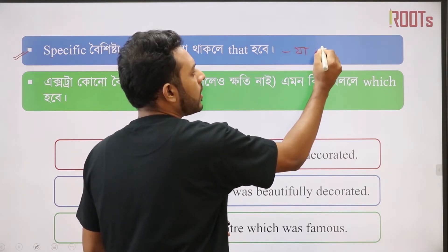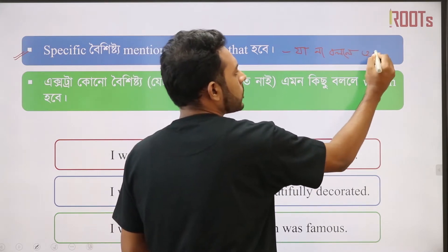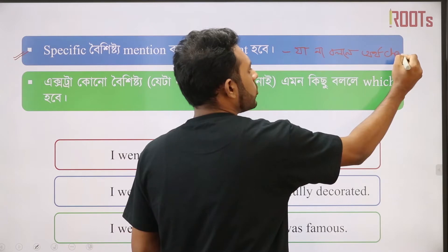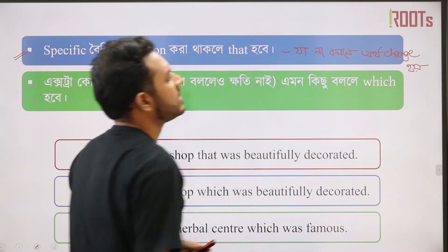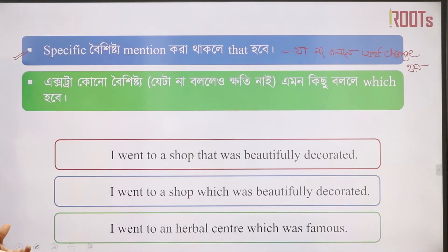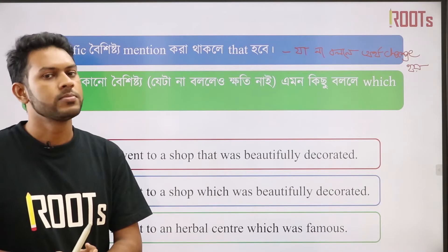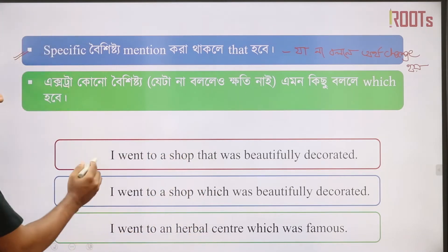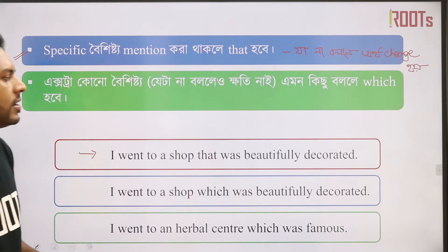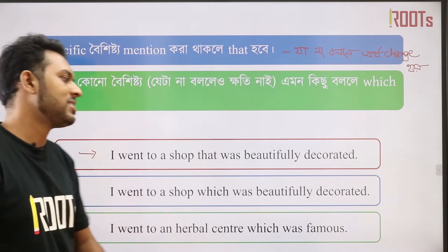Now, if you don't say it, you can still add extra words. For example: 'I went to a shop that was beautifully decorated.' But you can also say: 'I went to a shop which was beautifully decorated.' This is how it works with non-defining clauses.